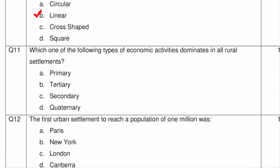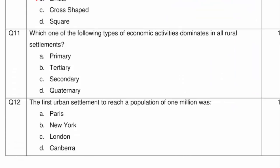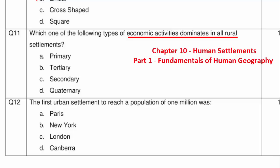Question 11 asks which type of economic activity dominates in all rural settlements. Also from the same chapter, the answer is Option A — primary activities — which includes agriculture, fishing, animal husbandry, and forestry. Since the beginning, people living in rural areas all over the world have been engaged in and dependent on various primary occupations.